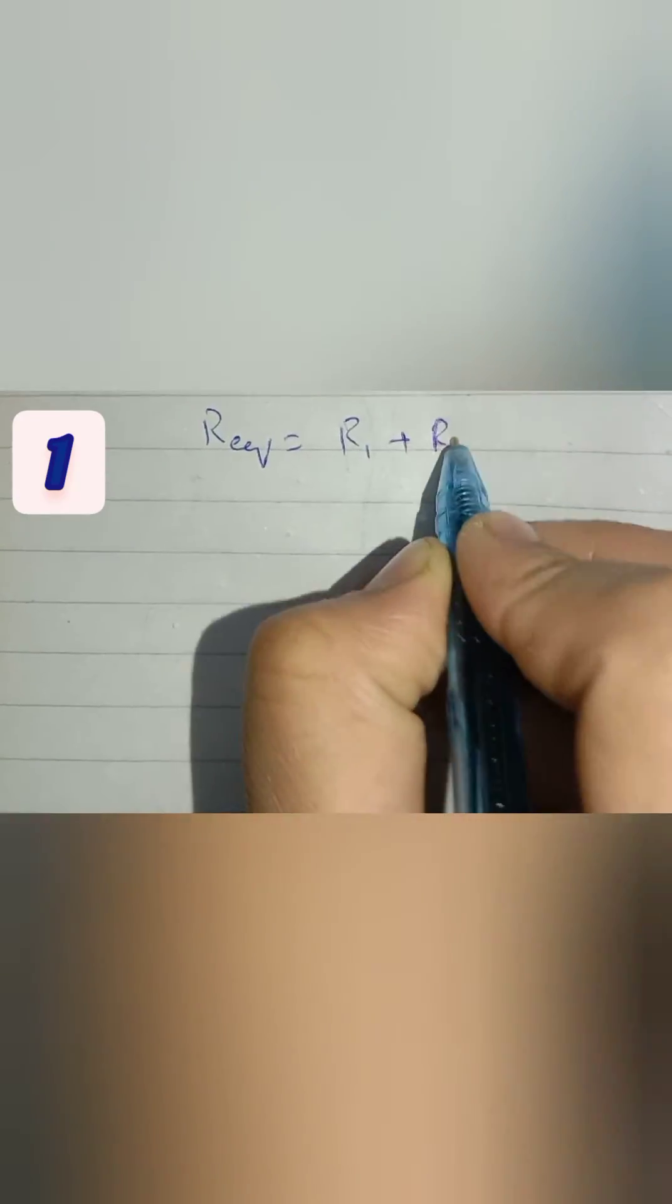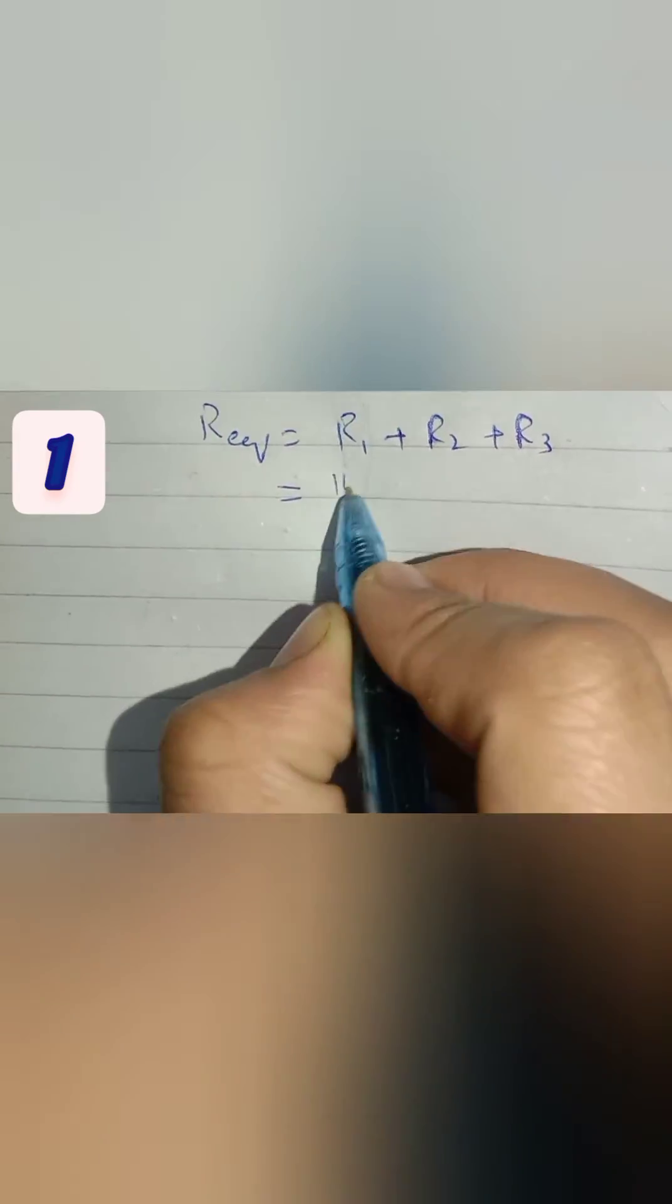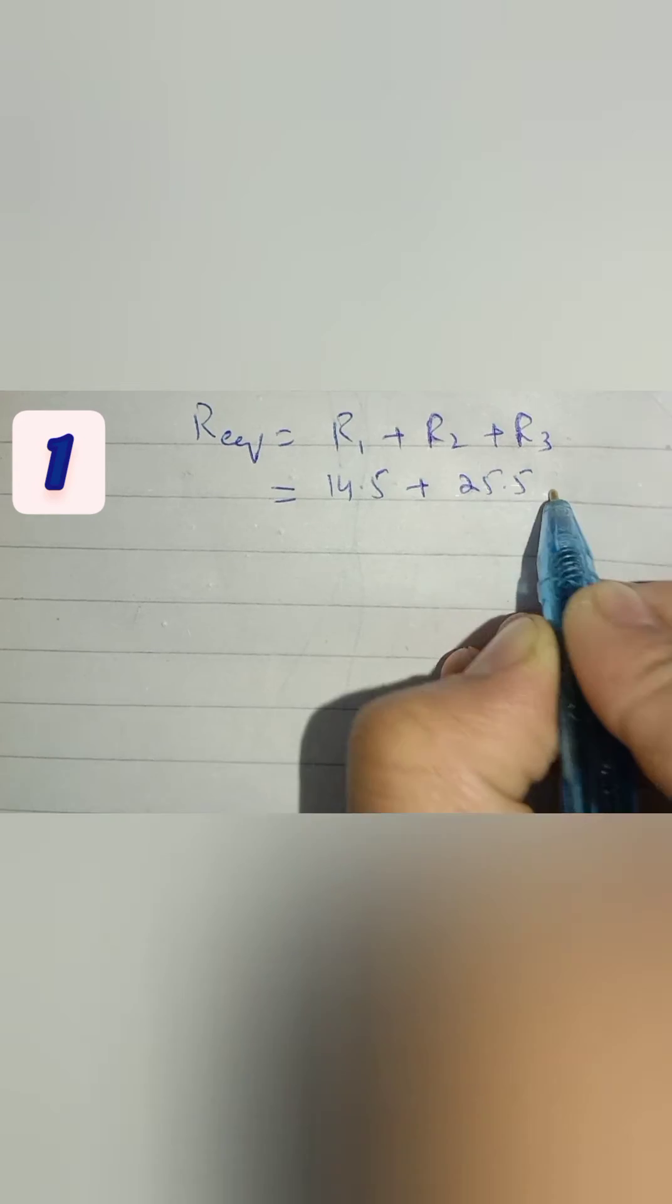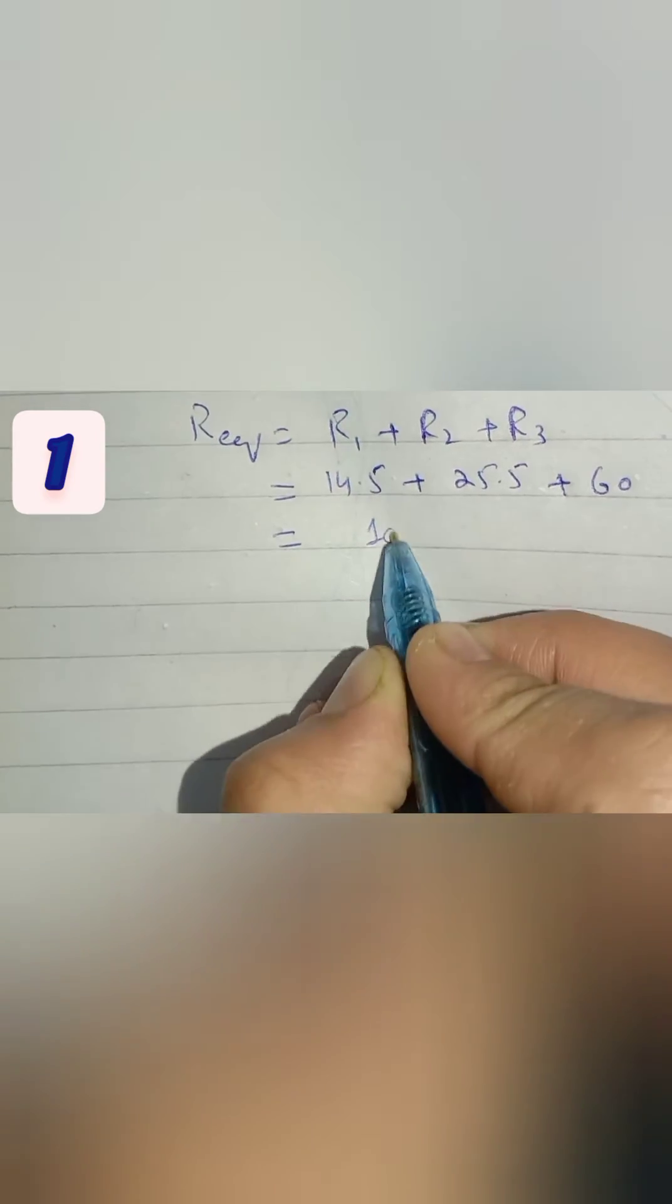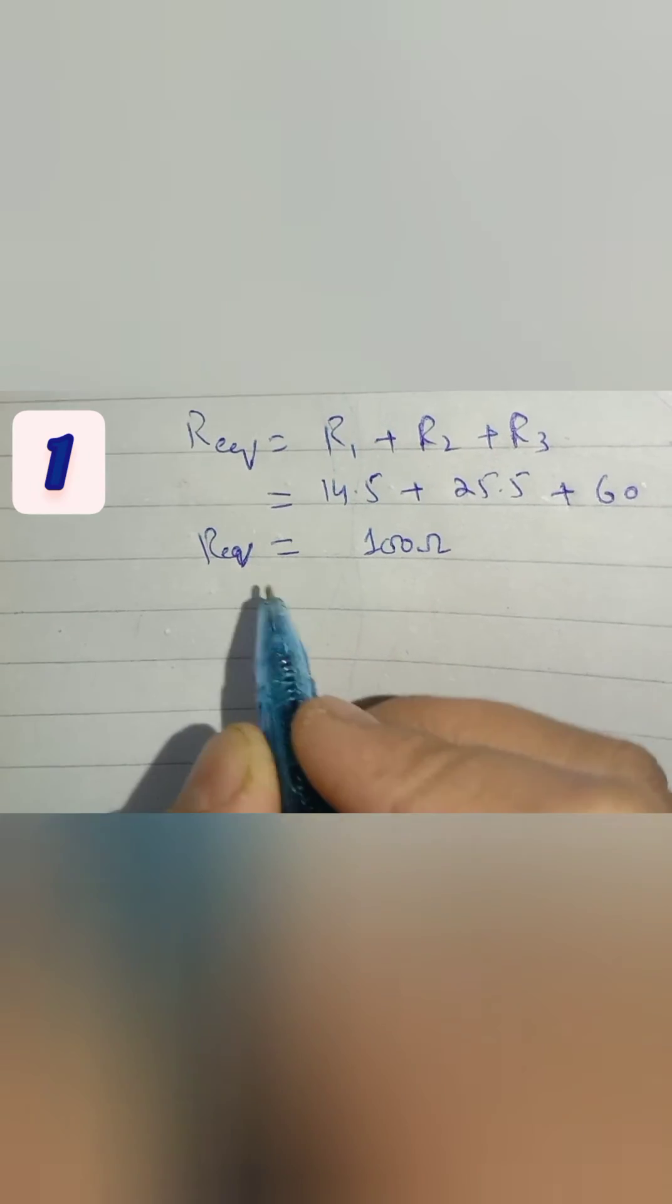This equals R1 plus R2 plus R3 as the circuit is in series, so our R equivalent comes out to be 100 ohms. We need to find this R equivalent because we have to find the current in the circuit.